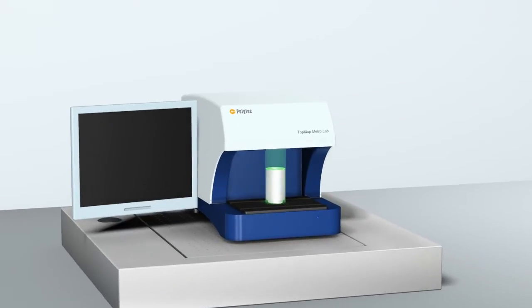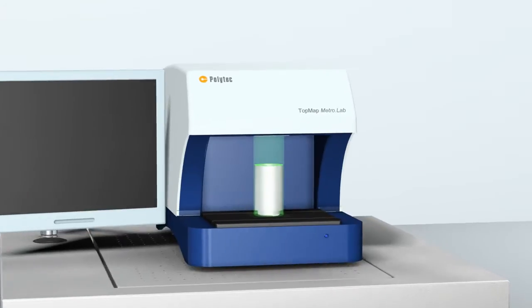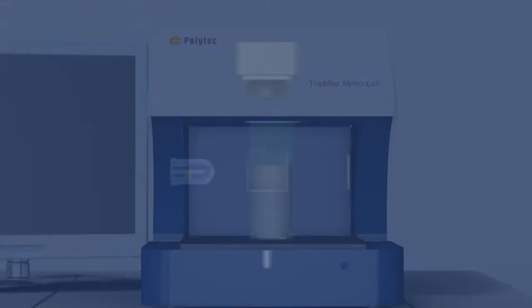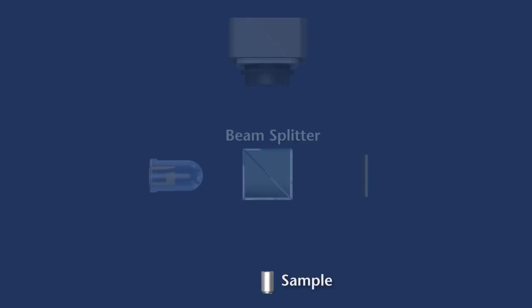The topography measurement is based on a technique called white light interferometry. Polytech's scanning white light interferometer is a special type of Michelson interferometer that scans the surface height of the test object.